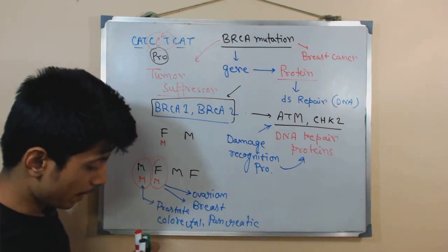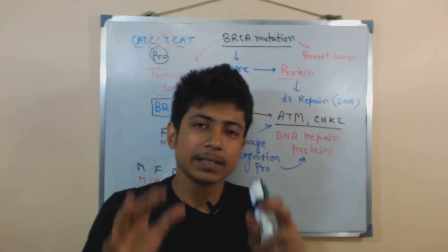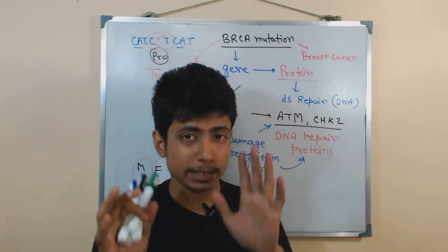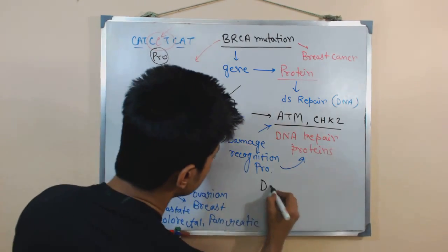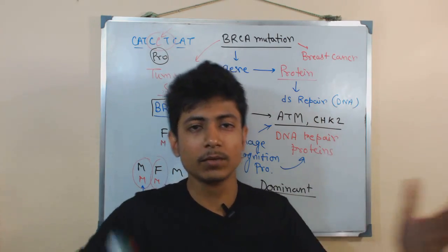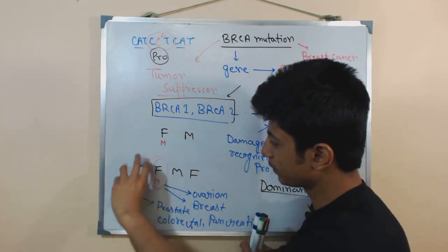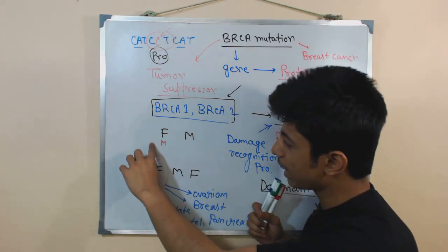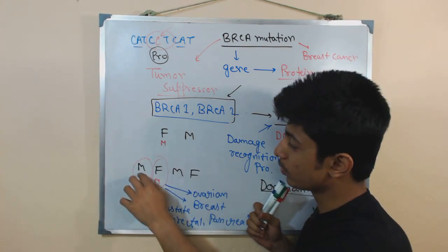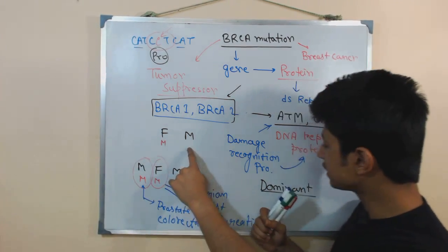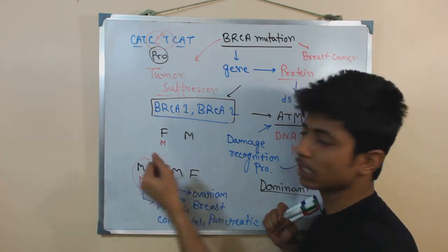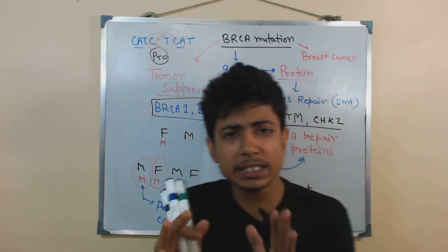This BRCA mutation is dominant in nature, so if your parent has it there is a significant chance you will get it too. We all inherit two gene sets — one from father, one from mother. Even if the father has one defected copy and the mother has a normal copy, because this mutation is dominant, you are likely to have the mutation — and that increases your chance of cancer.